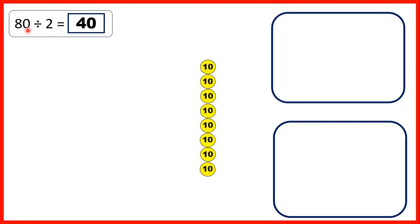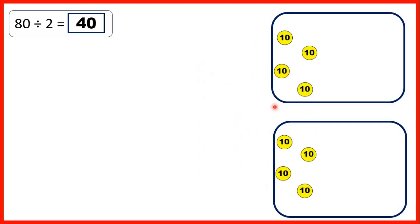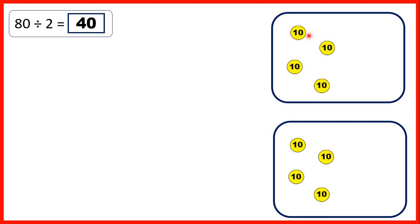So let's take a closer look at these questions. First, we had 80 divided by 2. With 80, we have 8 tens, and because we're dividing by 2, we can share these 8 tens into 2 groups. When we do that, we have 4 tens in each of our groups, so that's why our answer is 40.